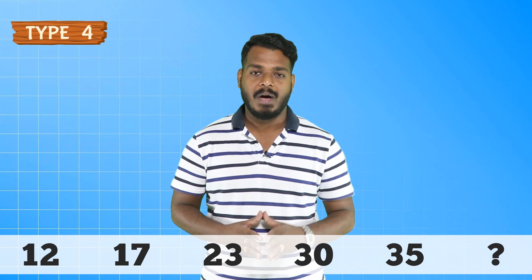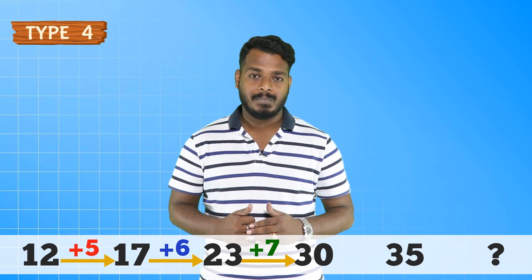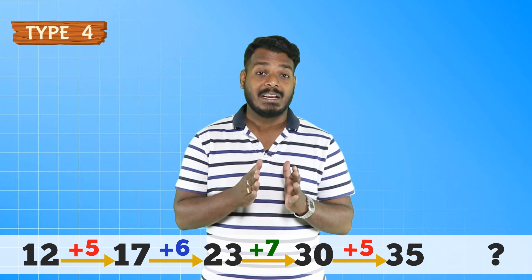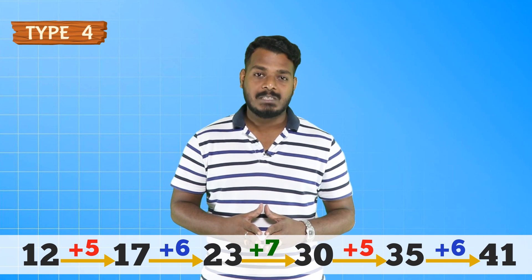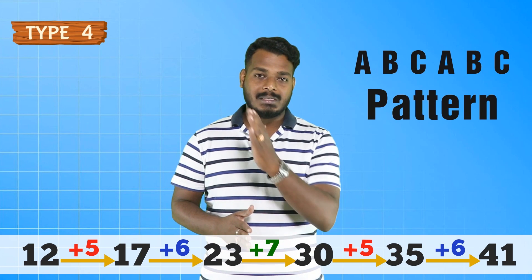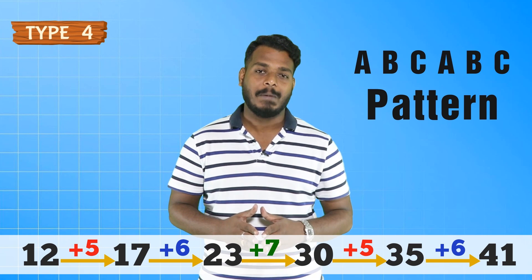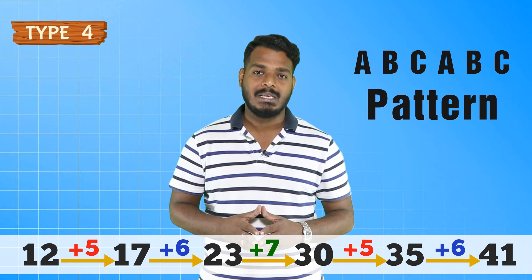Type 4 — have a look at this series: 12, 17, 23, 30, 35, question mark. The first difference is 5, then 6, the next difference is 7, and the next one again is 5. The pattern 5, 6, 7 repeats. So the next difference should be 6. Your answer would be 35 plus 6, that is 41. This pattern is called the ABC ABC pattern because three numbers — 5, 6, 7 — repeat themselves.